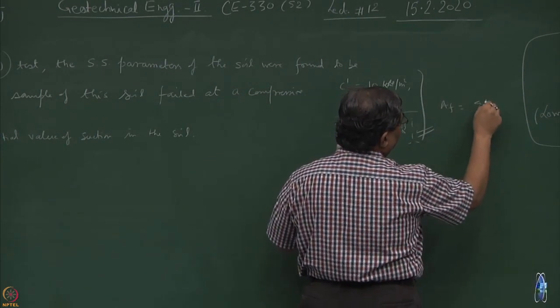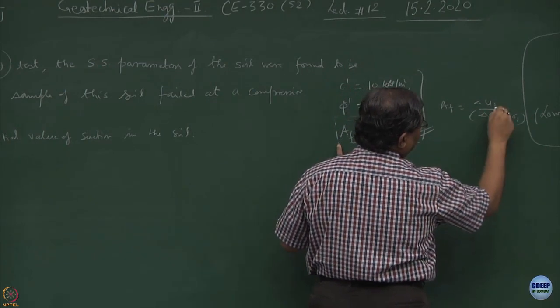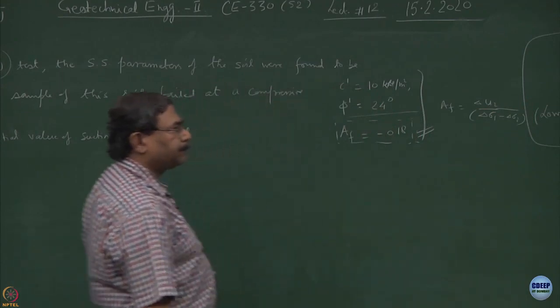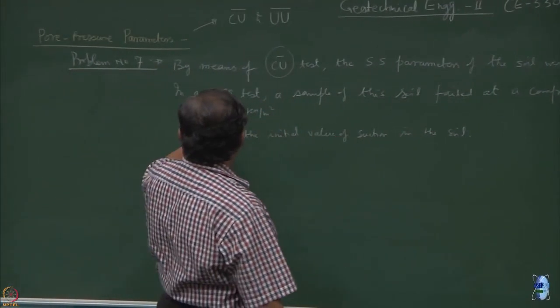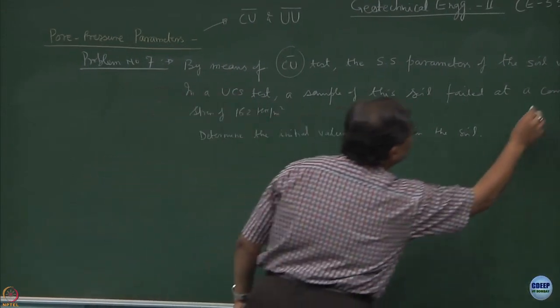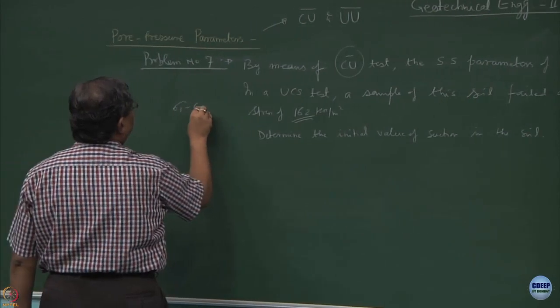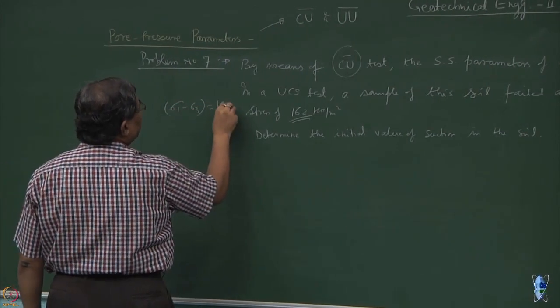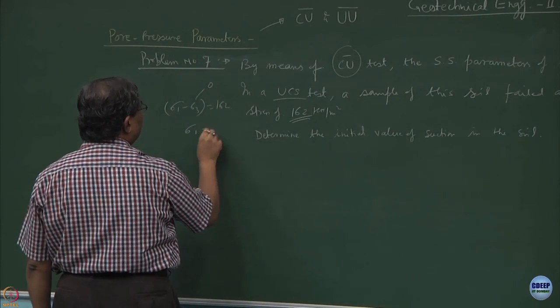AF is equal to delta U2 upon delta sigma 1 minus delta sigma 3. What is given to you is a compressive stress of sigma 1 minus sigma 3 will be equal to 162 and because this is a UCS, sigma 3 becomes 0. So sigma 1 becomes 162.